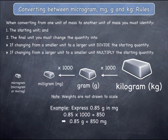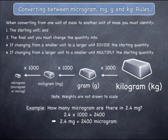If you are changing a quantity from grams to milligrams, you must multiply the starting quantity by 1000, as shown. And if you are changing a quantity from milligrams to micrograms, you must multiply the starting quantity by 1000, as illustrated.